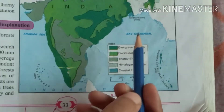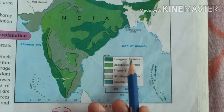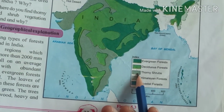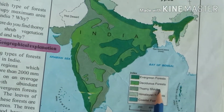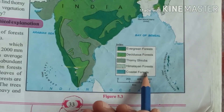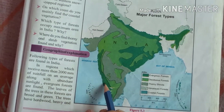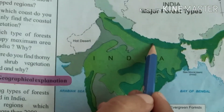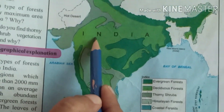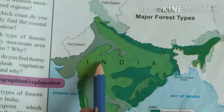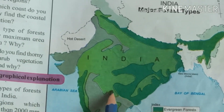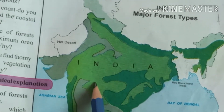On the map: dark green represents evergreen forest, light green represents deciduous forest, sea green represents thorny shrubs, neon color represents Himalayan forest, and bluish-green represents coastal forest. You can see dark green in the Western Ghats and northeastern ranges showing evergreen forest. Light green — deciduous forest — occupies the maximum area, receiving 1000 to 2000 millimeters of rainfall.